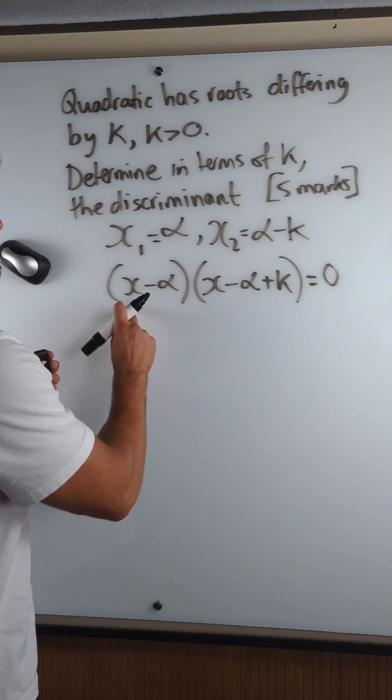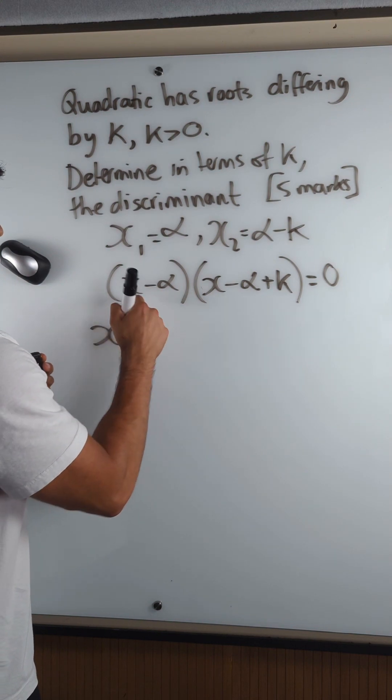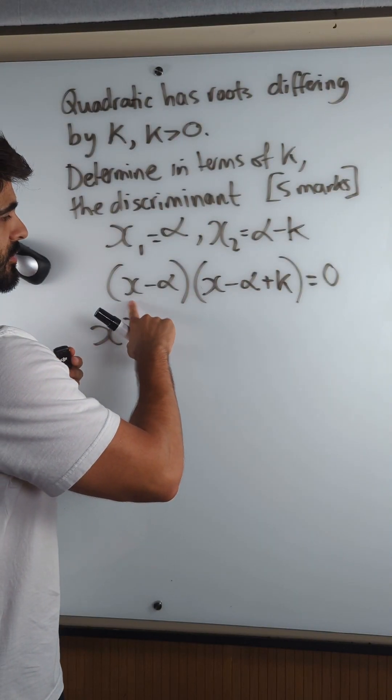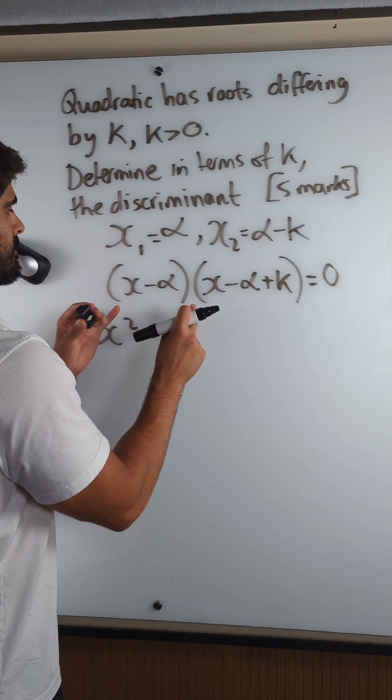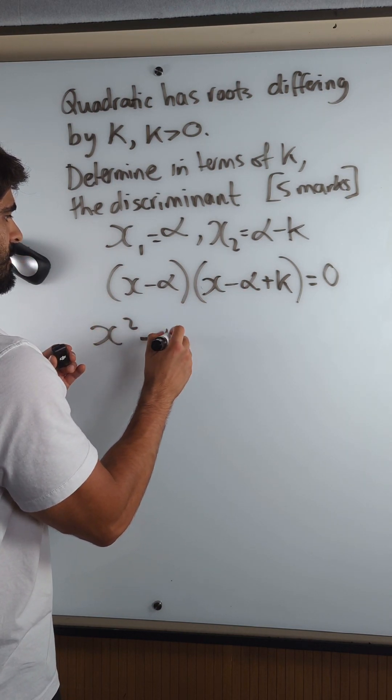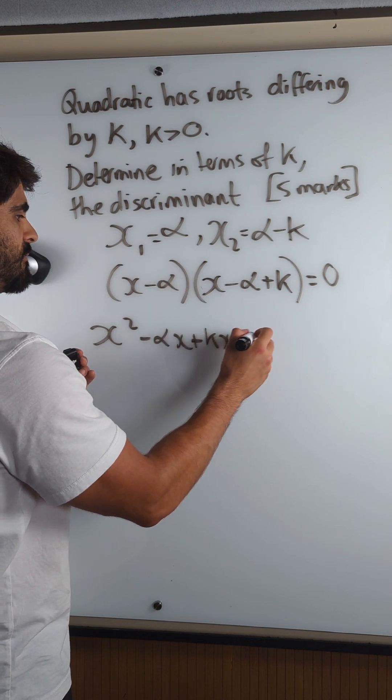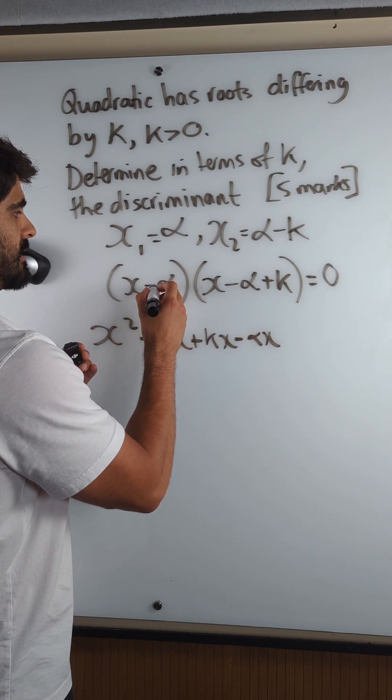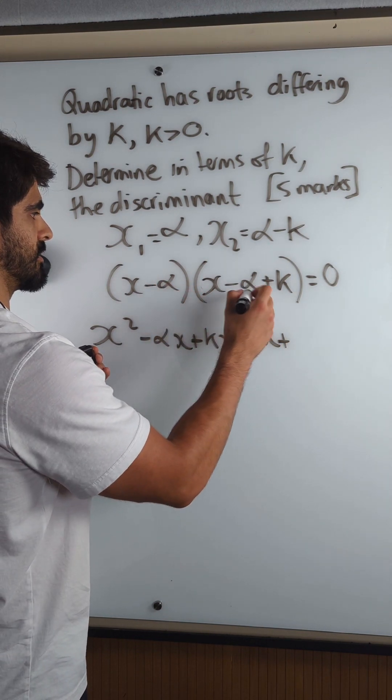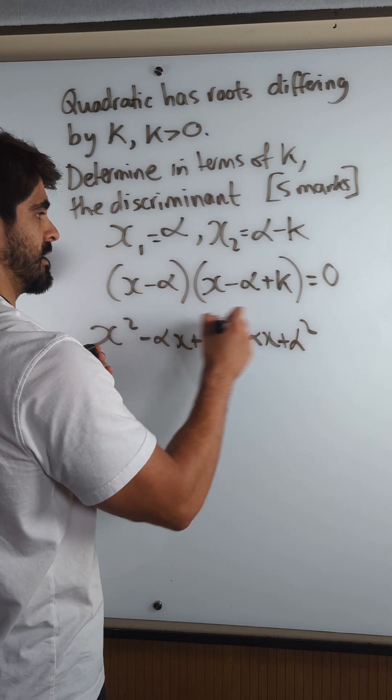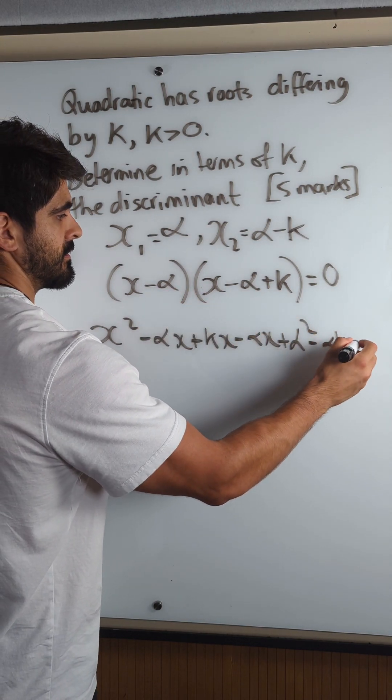Let's just expand the brackets. So we have x squared minus 2 alpha x plus k x plus alpha squared minus alpha k equals zero.